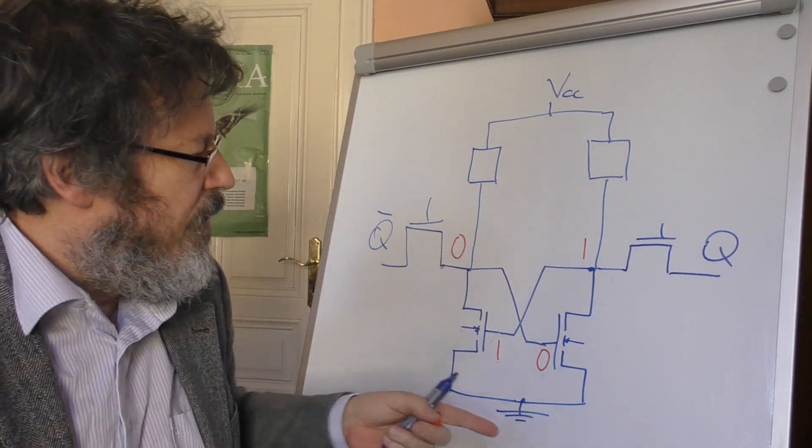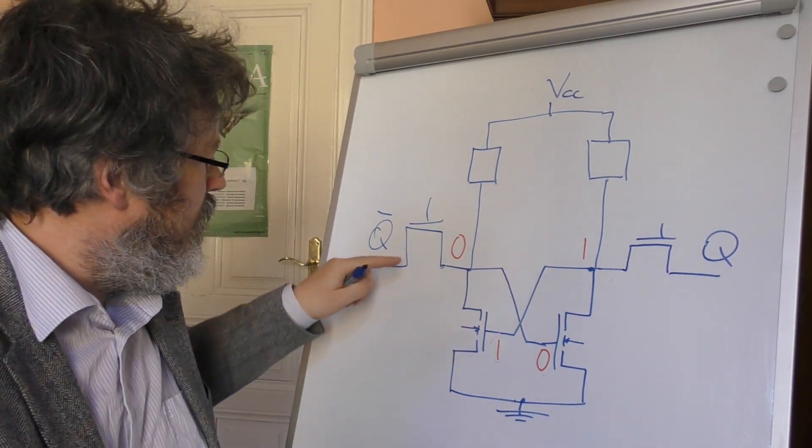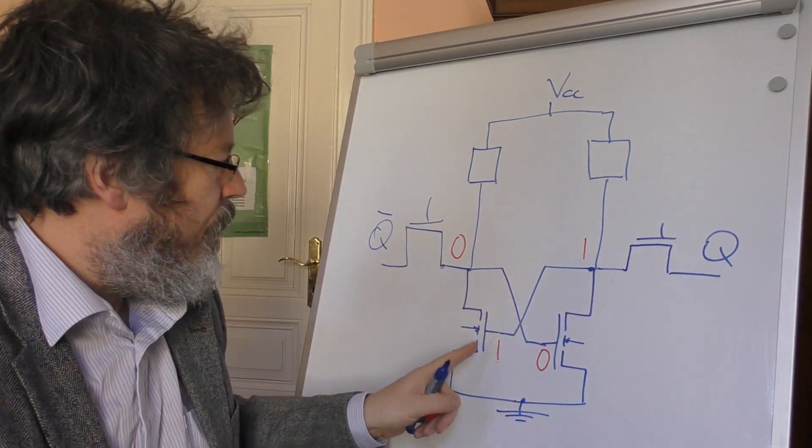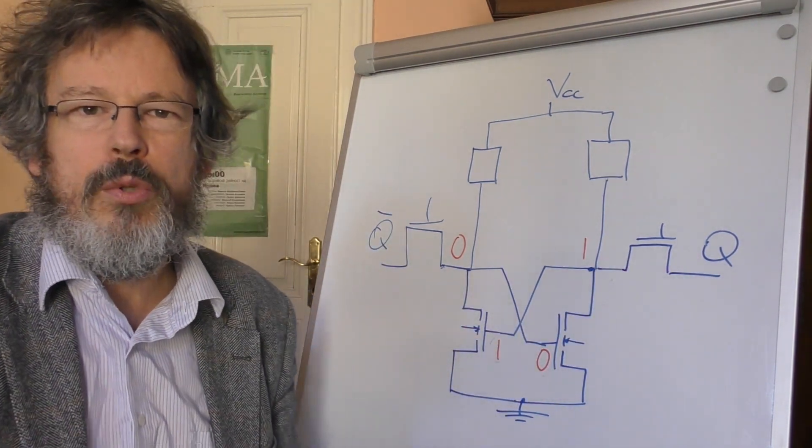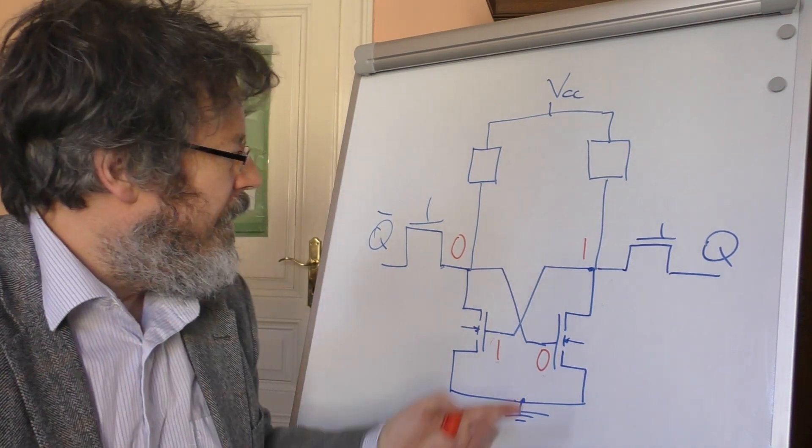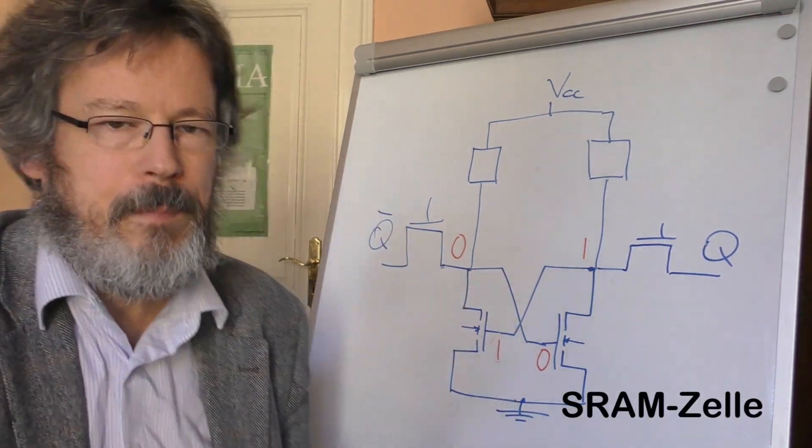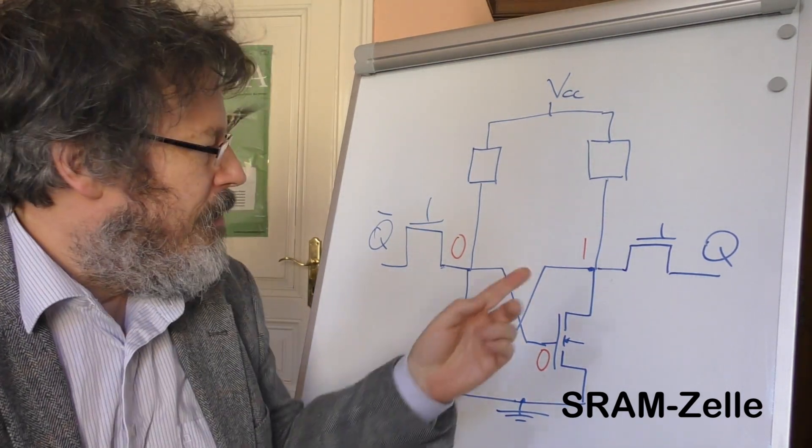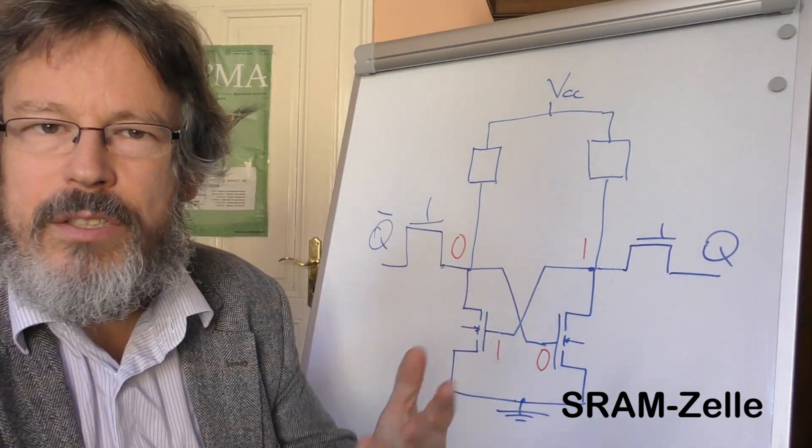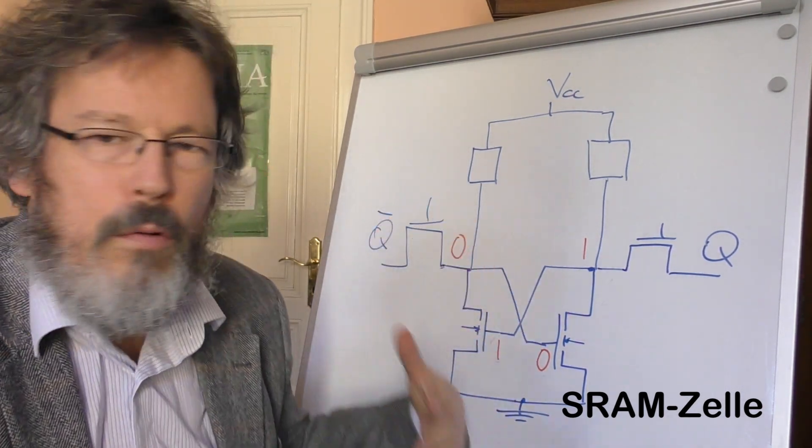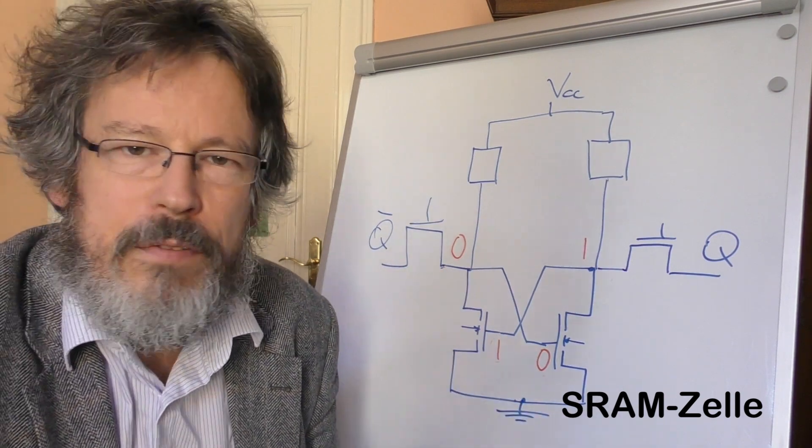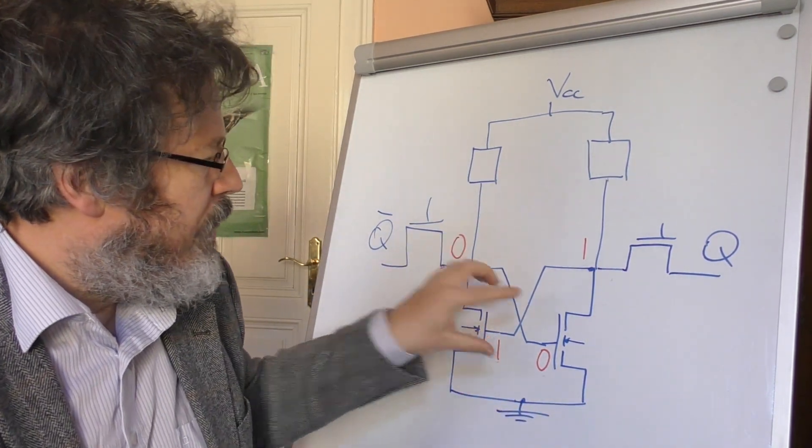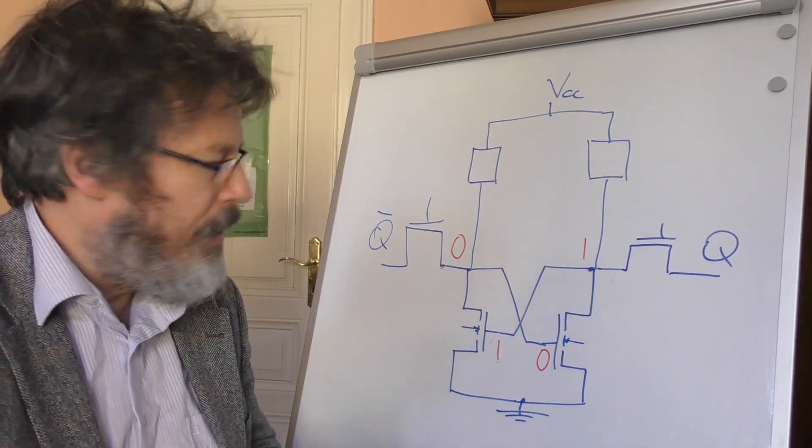This low potential blocks this transistor, whereupon this output here gets a high potential via the ohmic resistor, goes to this gate with high potential, the gate opens a channel and sets this to a low potential again. In this sense, this is a very simply built flip-flop—it has only, let's count together, 1, 2, 3, 4 transistors. This is called an SRAM cell. It's a static RAM, static because—we'll see this later—in contrast to dynamic RAM, no charging processes need to take place. Once it's stable, it stays stable.